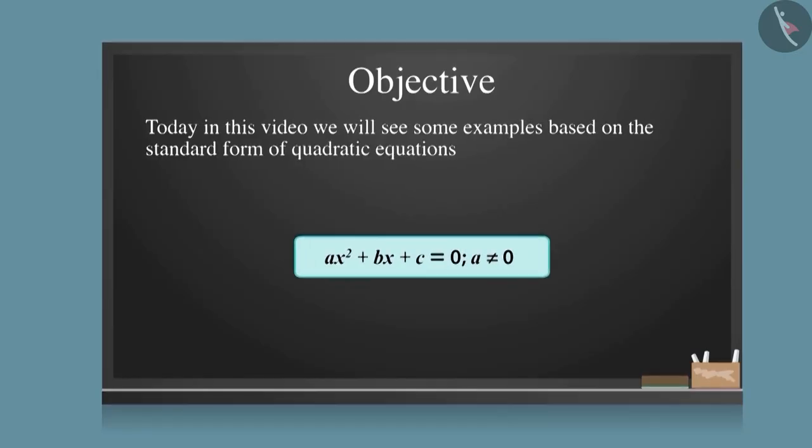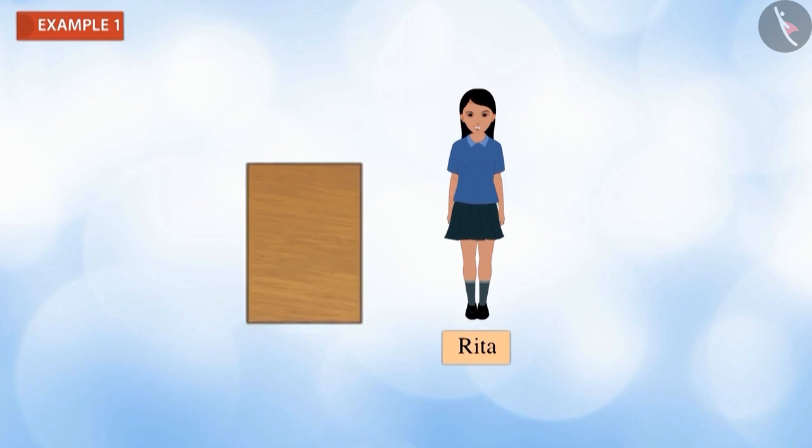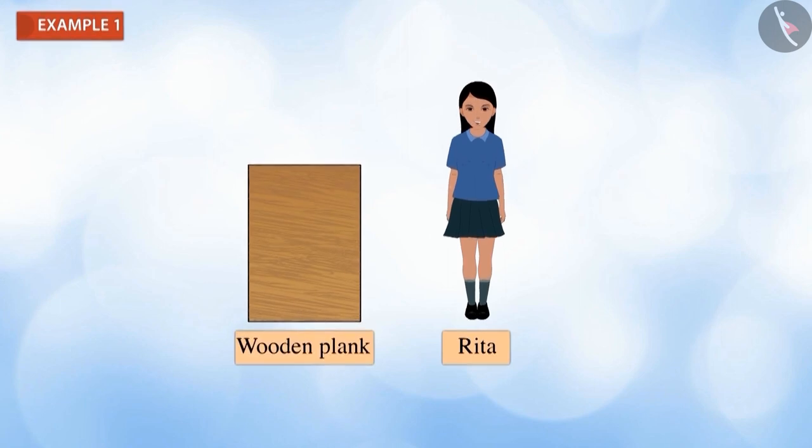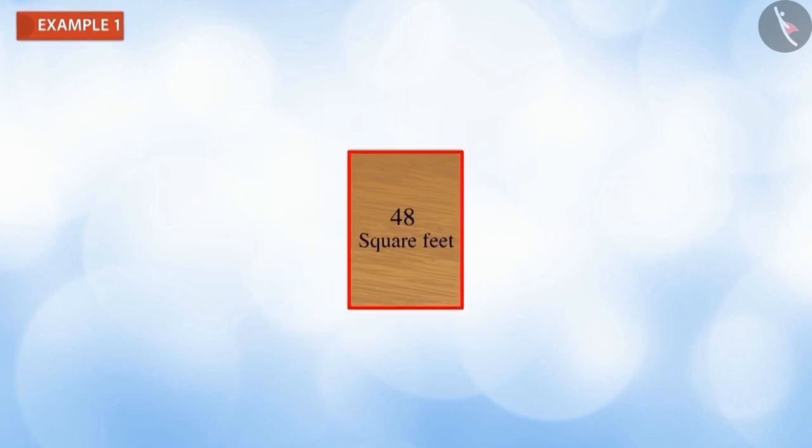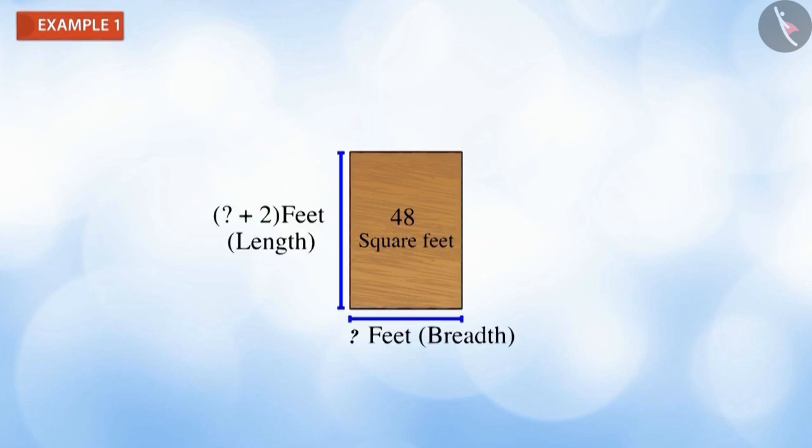Let's look at some examples based on it. Rita has a wooden plank with an area of 48 square feet and its length 2 feet more than the breadth.